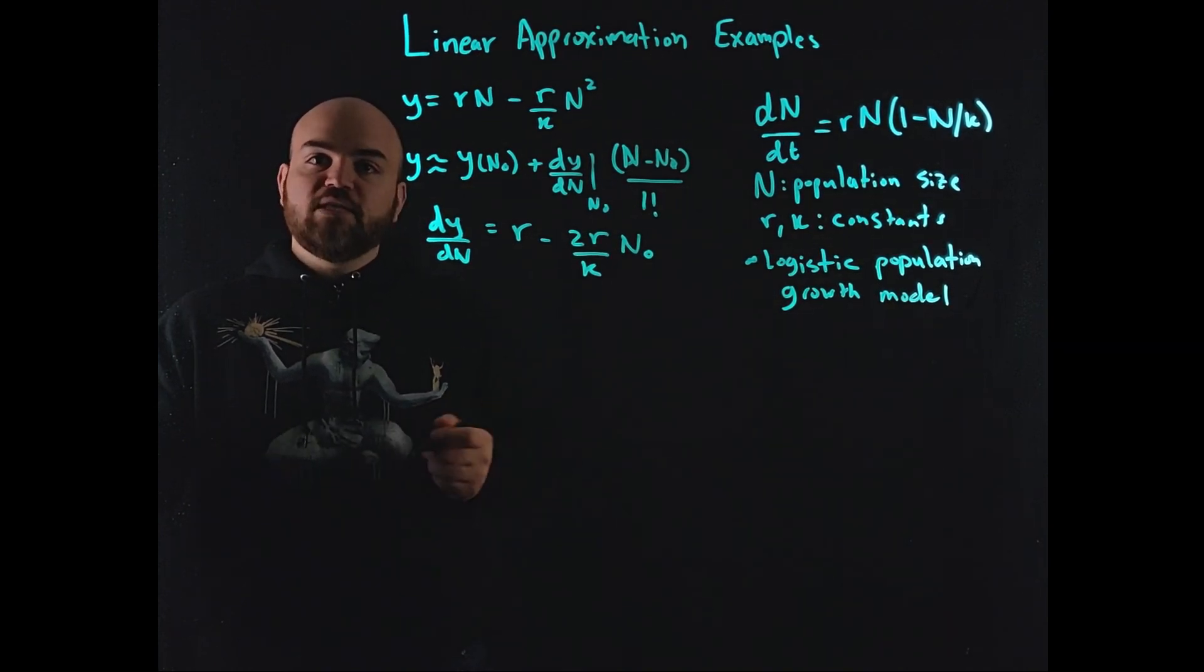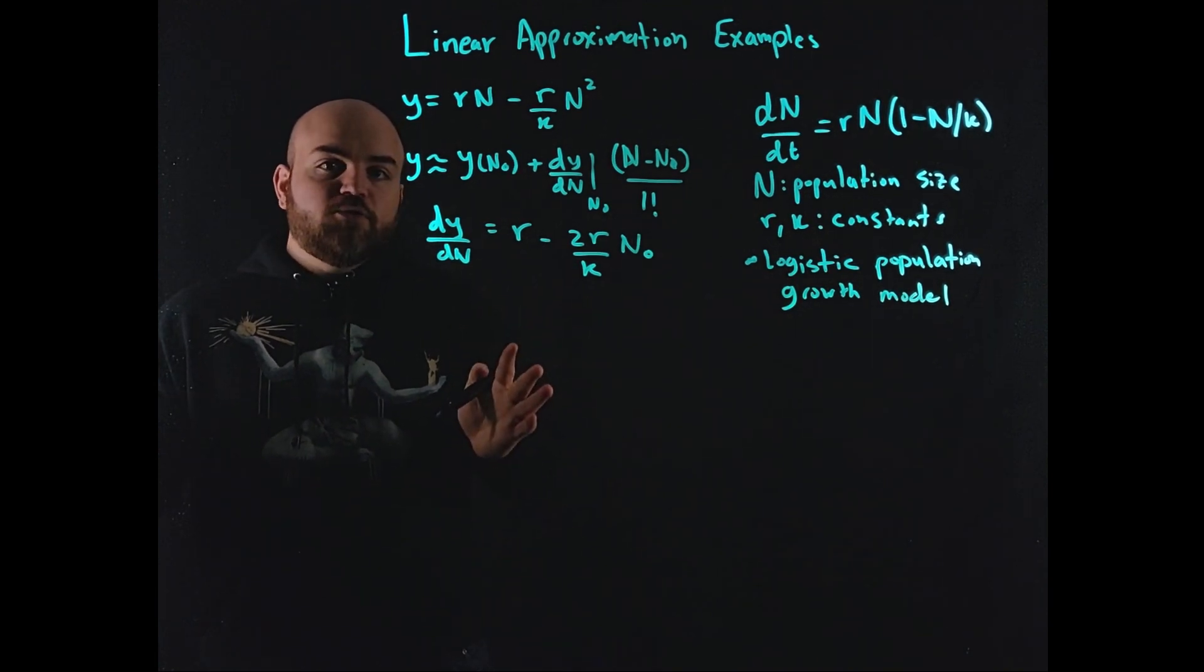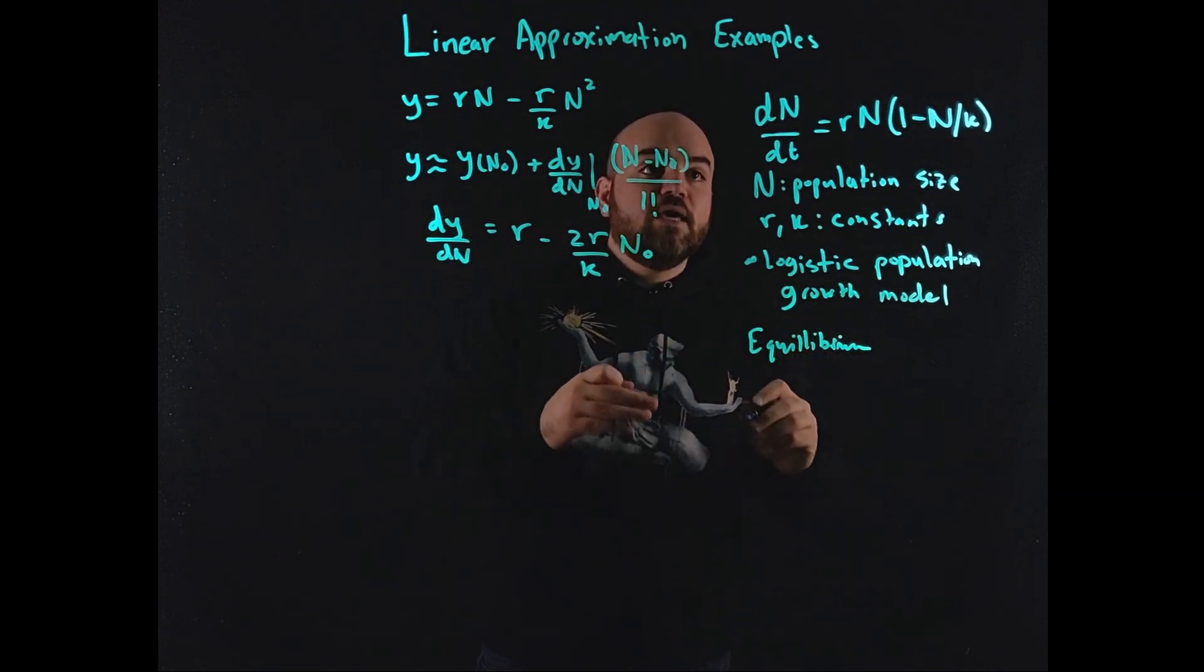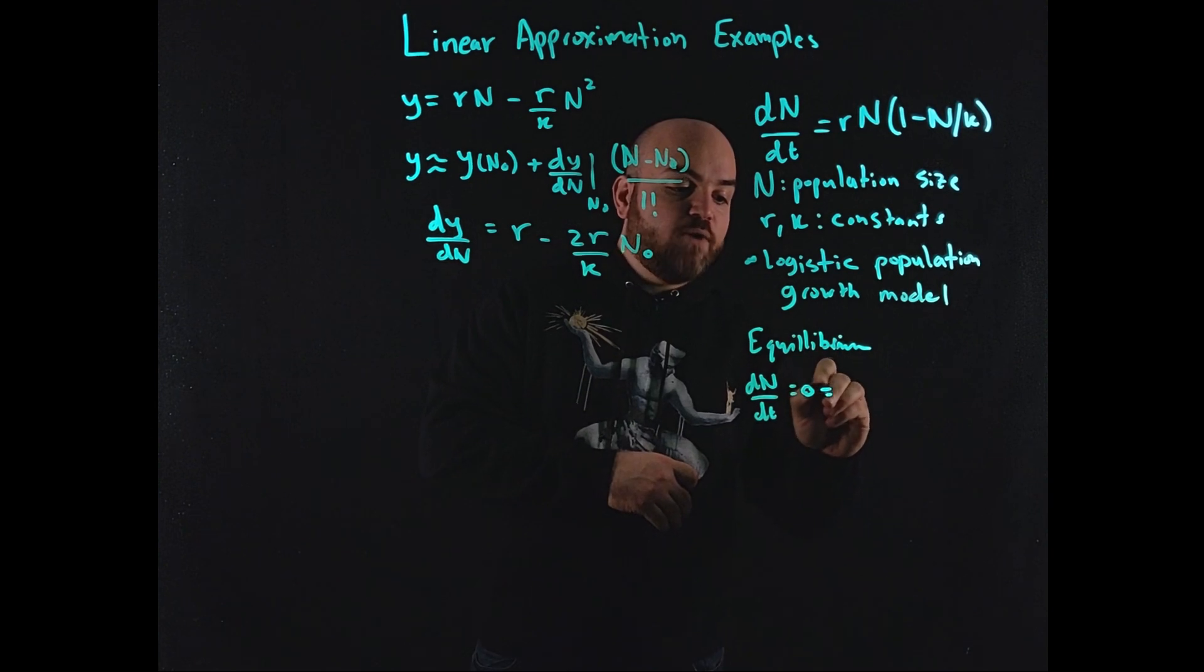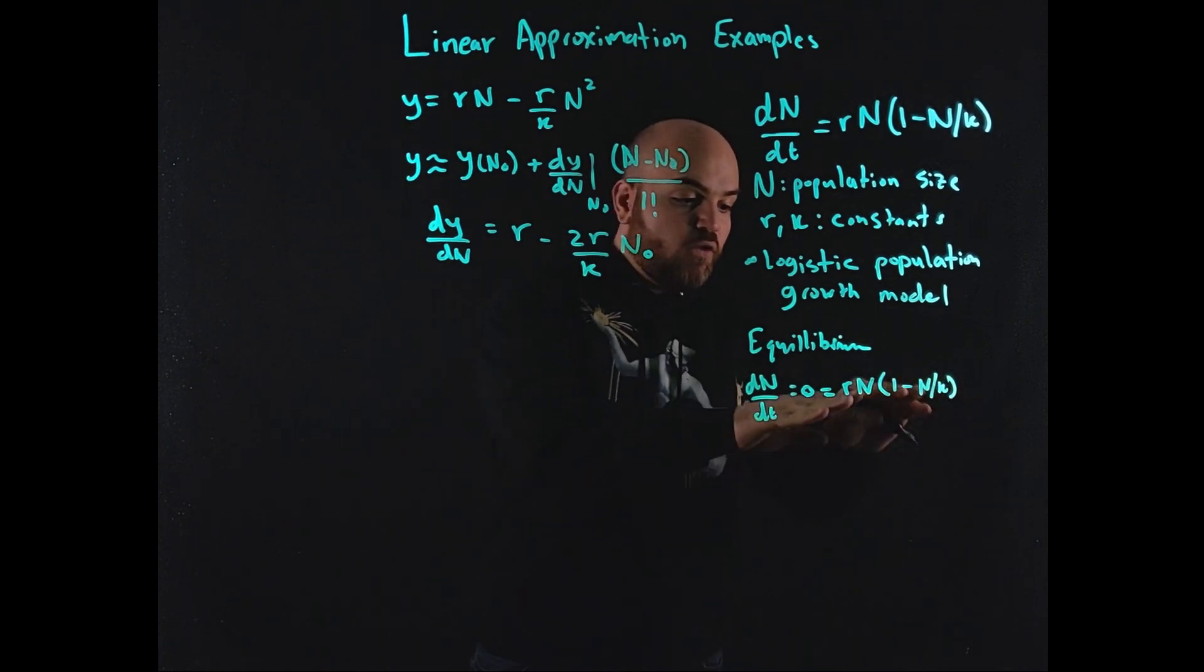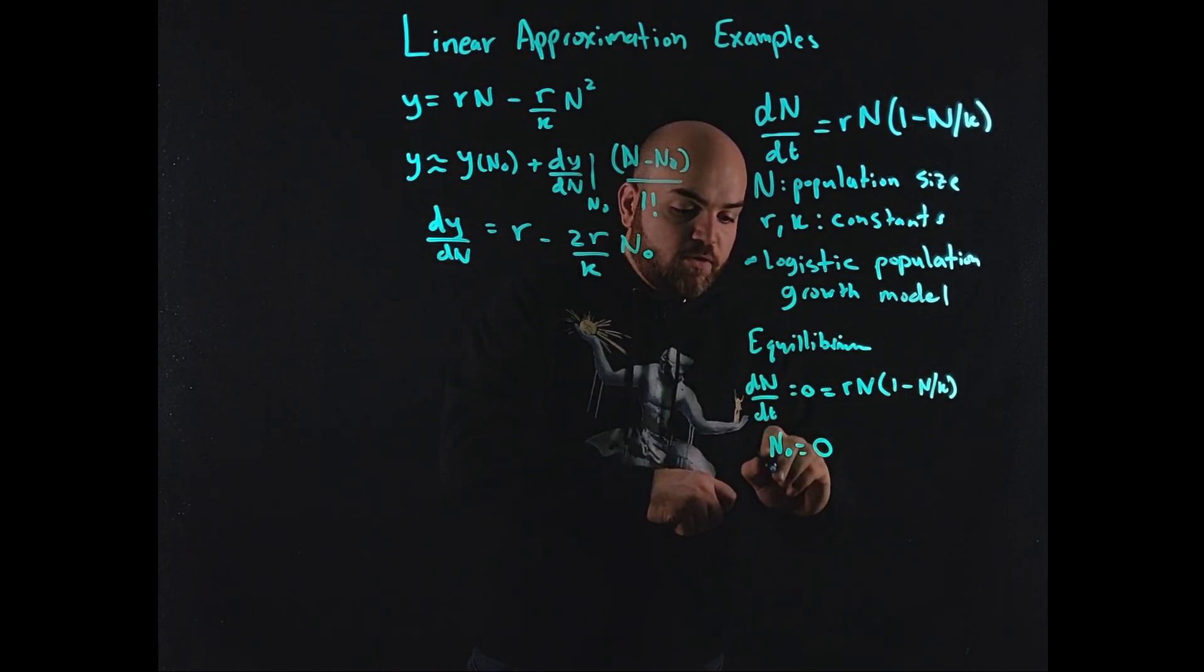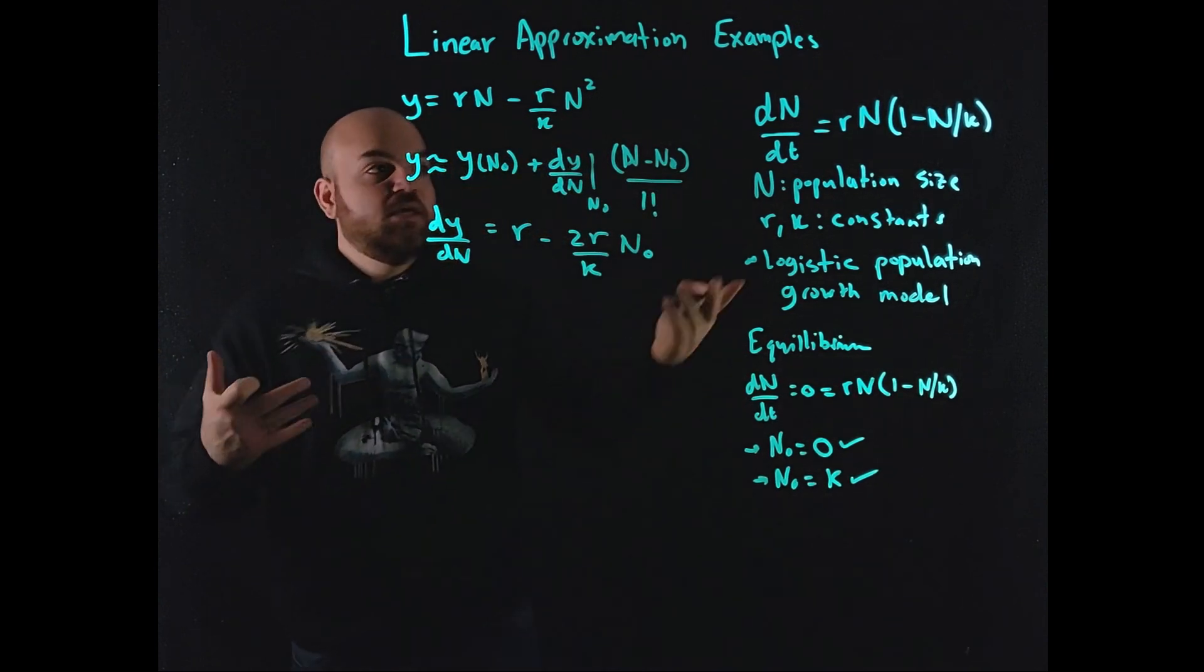So what value do I pick, right? Previously, with the inverted pendulum example, we knew that the operating point would be around 0 for the angle, right? Here, we might not be quite so sure. One way to pick a point to linearize about is to look at the differential equation and pick the equilibrium point. And what the equilibrium point typically refers to is the area where the derivative is equal to 0. So nothing is changing. The system is at equilibrium. And where would that happen? rn times 1 minus n over k, right? That's the equation. So the only way that two things that are multiplied together would be 0 is one of them has to be 0 or both of them are 0. So if this term is 0, that means n naught is 0. If this term is 0, that means that n naught is equal to k, right? So these are the two equilibrium points for this nonlinear system.